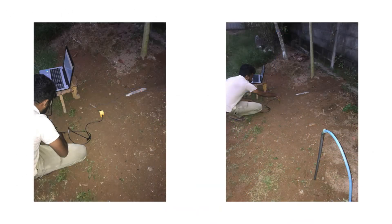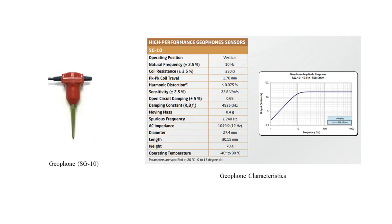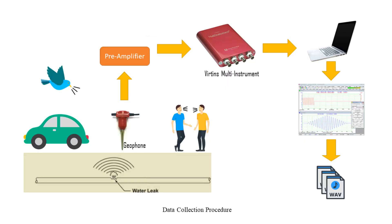A water tap nearby was used to supply water to the apparatus. A small hole was made purposely on the pipe to create a leak. To collect acoustic data from this setup, a geophone is used. The whole data acquisition setup consists of a geophone, the geophone preamplifier, and a PC-based oscilloscope to record audio inputs. In this manner, on the ground around the leak point, a number of data samples are taken.